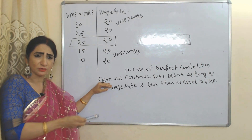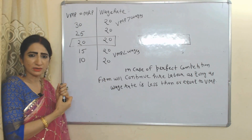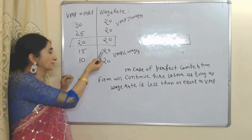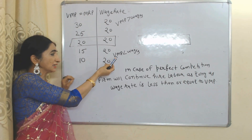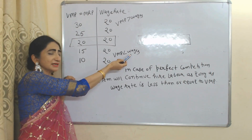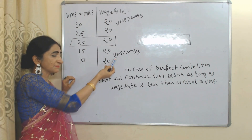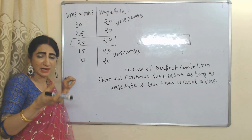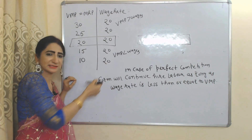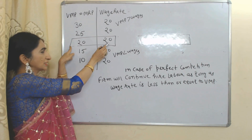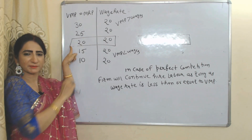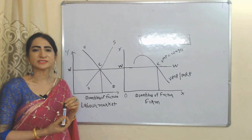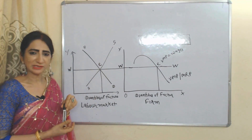Above this point, VMP is more than wages; below this point, VMP is less than wages. In case of perfect competition, the firm will continue to hire labor as long as the wage rate is less than or equal to VMP, but the firm will not hire labor if VMP is less than wages. This is the equilibrium point of the firm under perfect competition in the factor market.